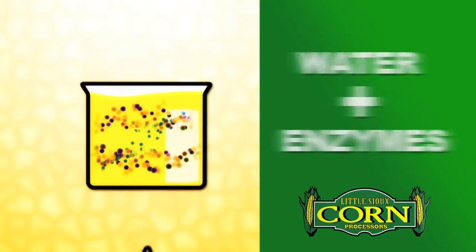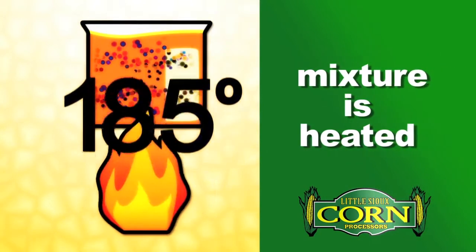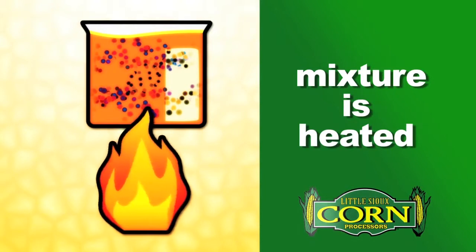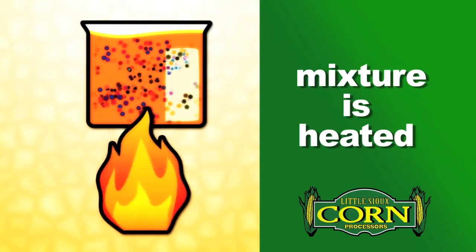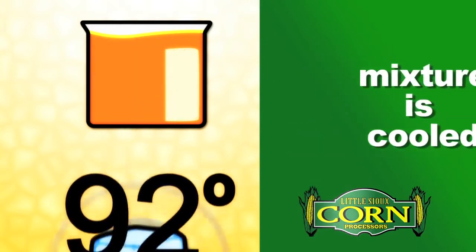Enzymes are added to this water. This mixture, called mash, is heated to around 185 degrees. At that temperature and with the help of enzymes, the corn starch in the mixture breaks down to become fermentable sugars.